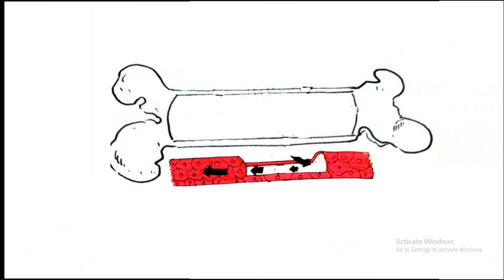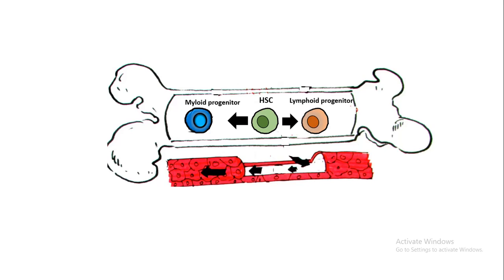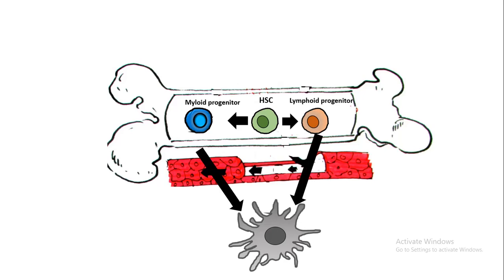Where does the dendritic cell come from? Dendritic cells are developed from either a lymphoid progenitor or a myeloid progenitor in the bone marrow. So both of those progenitors can potentially give rise to dendritic cells.